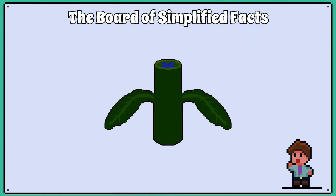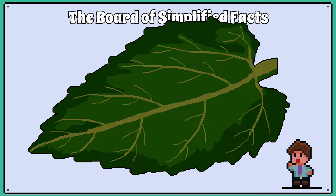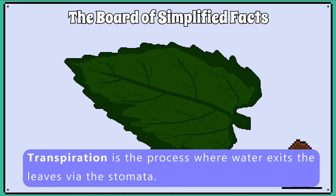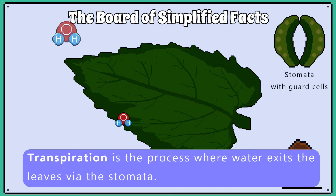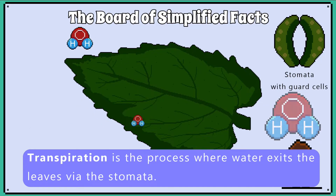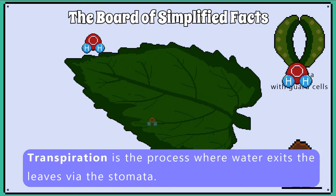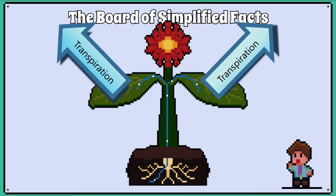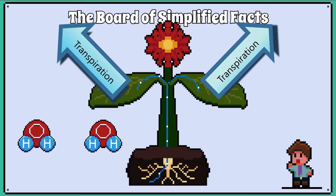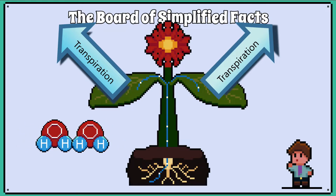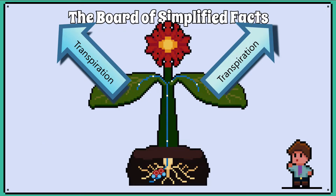The xylem runs through the roots, up the stem, and into the leaf veins to form a network that can help reach all the cells in the plant. Transpiration is the process where water exits the leaves via the stomata. This evaporation of water via the stomata helps to cool the leaf and regulate temperature. It also helps to pull water up the plant, because water molecules are attracted to other water molecules, so water follows water.